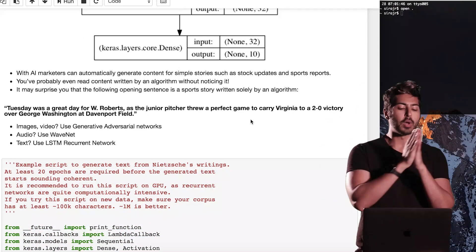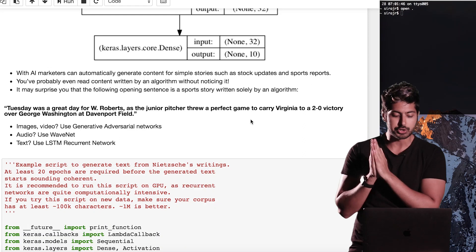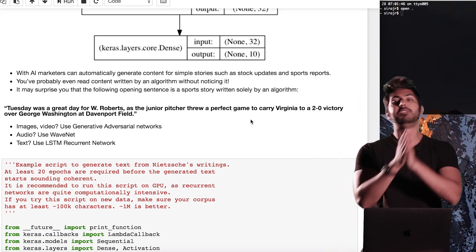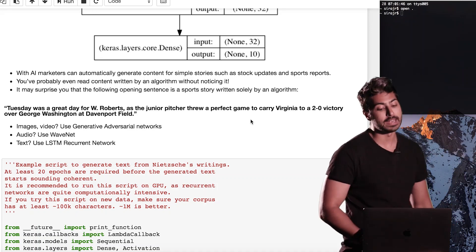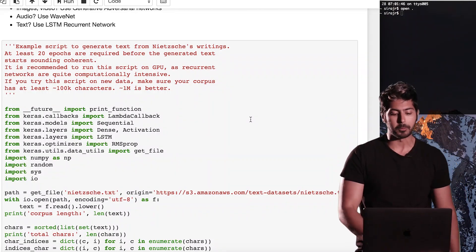So the idea is that if you have images or video, then you want to use generative adversarial networks to generate content. If you want to generate audio, you use WaveNet. And if you want to generate text, you use LSTM recurrent networks like I'm talking about here. And remember, I have videos for all of these models. Just search my name and the model.